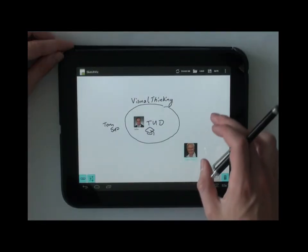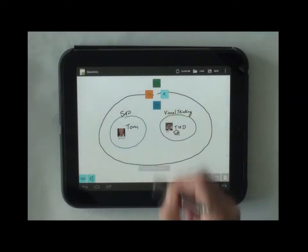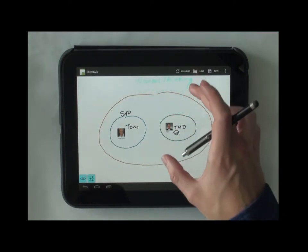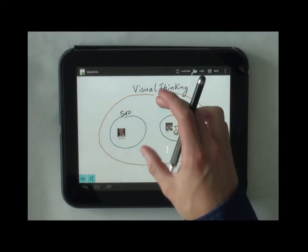To rearrange and reprioritize information later, for example, when he finds out that Tom is the chief of the other ones, and they are all working together in a project called Visual Thinking, he can do that really easily with SketchViz.